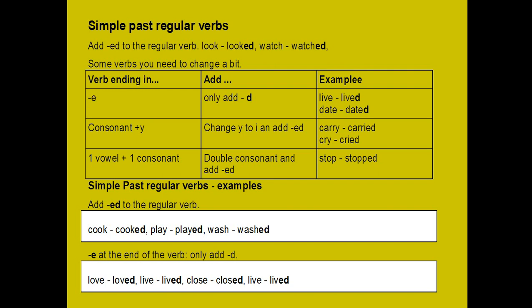Rule 1 — verb ending in -e: add only -d. For example: live → lived, date → dated. Sadece -e harfiyle biten fiillere -d harfini ekliyoruz.